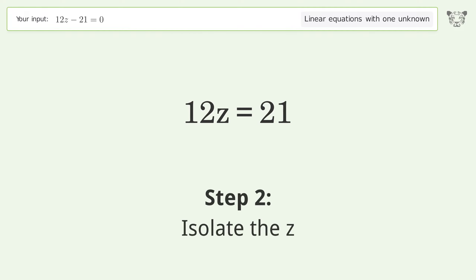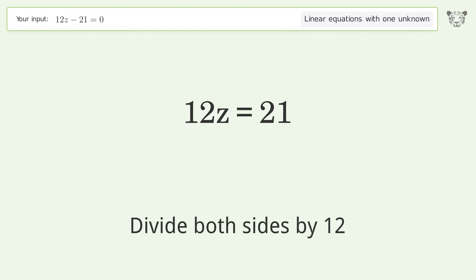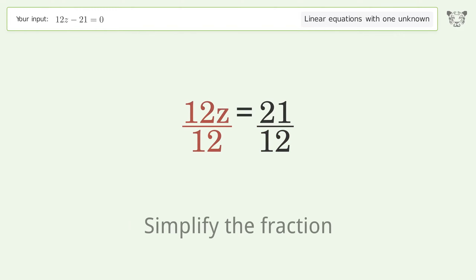Isolate the z by dividing both sides by 12, then simplify the fraction.